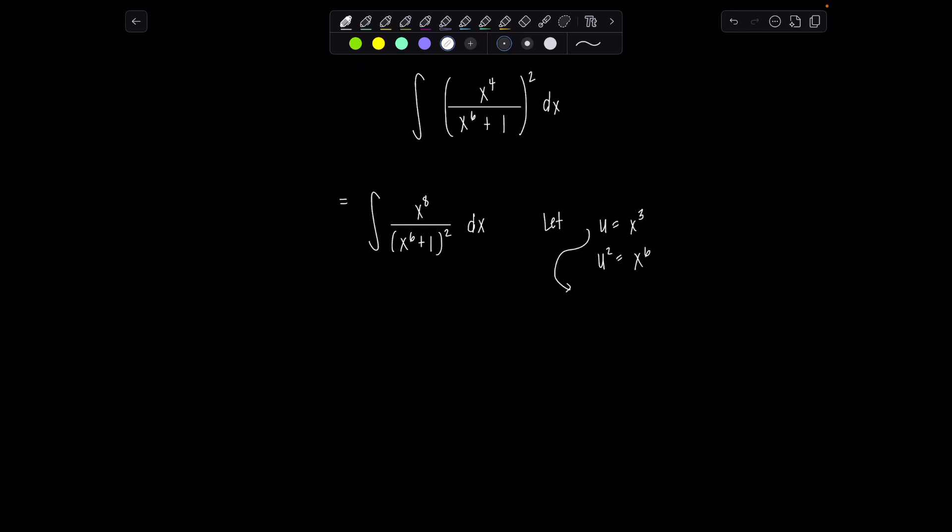And then remember, when we make a u substitution, we have to find du. In this case, that would be 3x squared dx. And we pretty much have that. Remember, I can rewrite this numerator as x to the sixth times x squared dx. And then now maybe you're getting more excited about the u substitution. Oh, yes. And then x to the sixth plus one, that's x cubed squared plus one squared. Can you see it now? Exactly. So one third du is x squared dx.